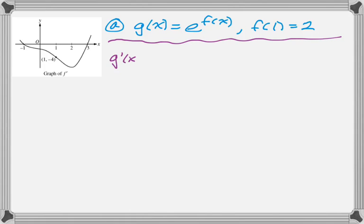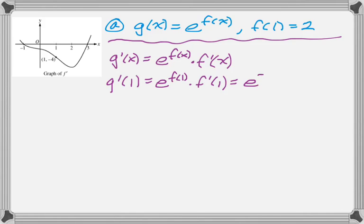So we need a derivative, so g'(x) = e^(f(x)) times f'(x). Do not forget the chain rule there. We're going to substitute some values. So e to the f(1) times f'(1). We know that f(1) is 2 because that was given.